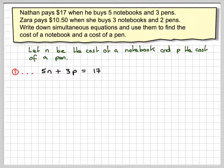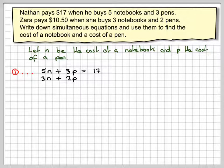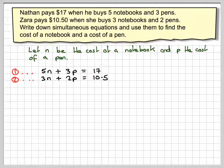I'll call that equation 1. In the case of Sarah, she buys 3 notebooks and 2 pens and that costs $10.50. Call that equation 2.